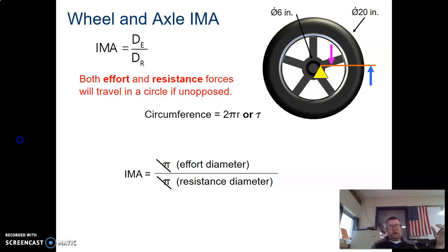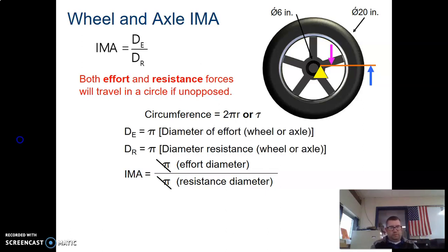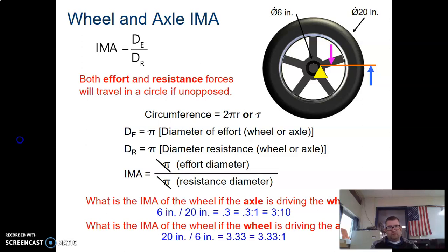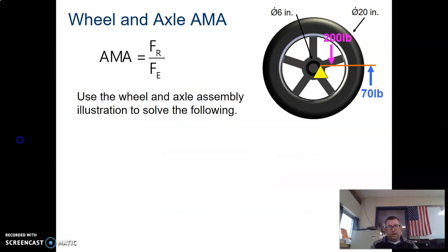When we're looking at the IMA of a wheel and axle, it is the diameter of both of those. There's the example. You need to pay attention to if the axle is driving the wheel or if the wheel is driving the axle.